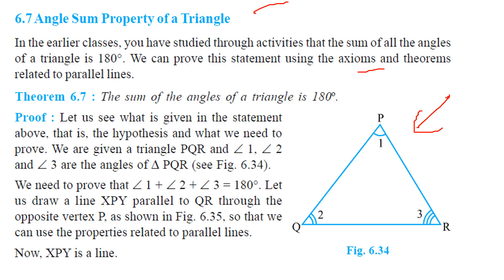First of all, here we have a hypothesis that we need to prove. We are given a triangle PQR where angle 1, 2, and 3 are the angles of triangle PQR. So we have to prove that 1 plus 2 plus 3 is equal to 180 degrees.